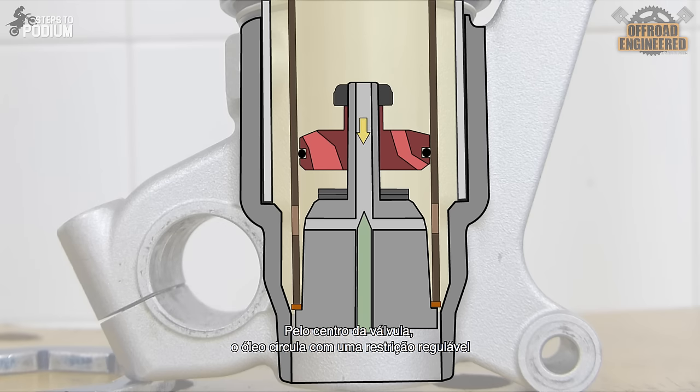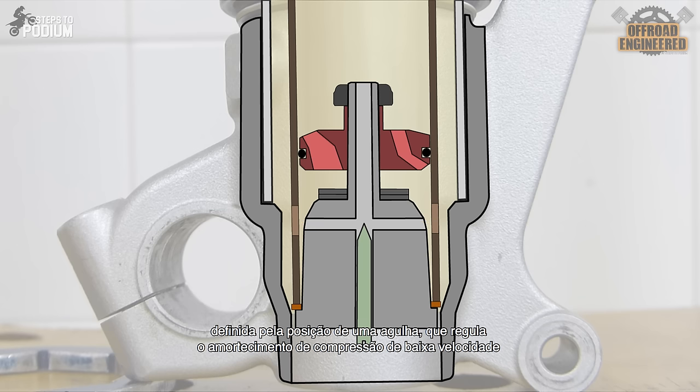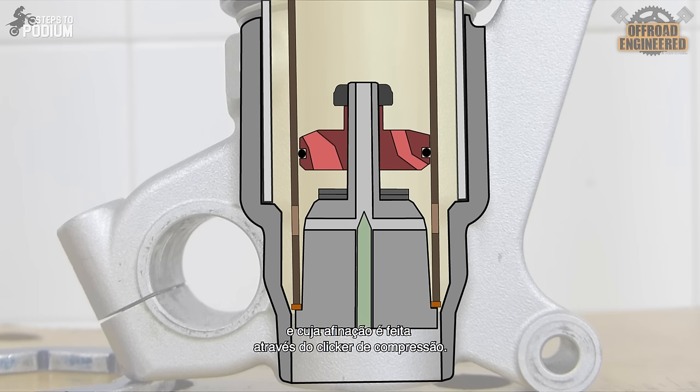Through the center of the piston, the oil flows with a variable restriction, determined by the position of a needle, which is responsible for the low-speed damping, and its adjustment comes from the well-known clickers.